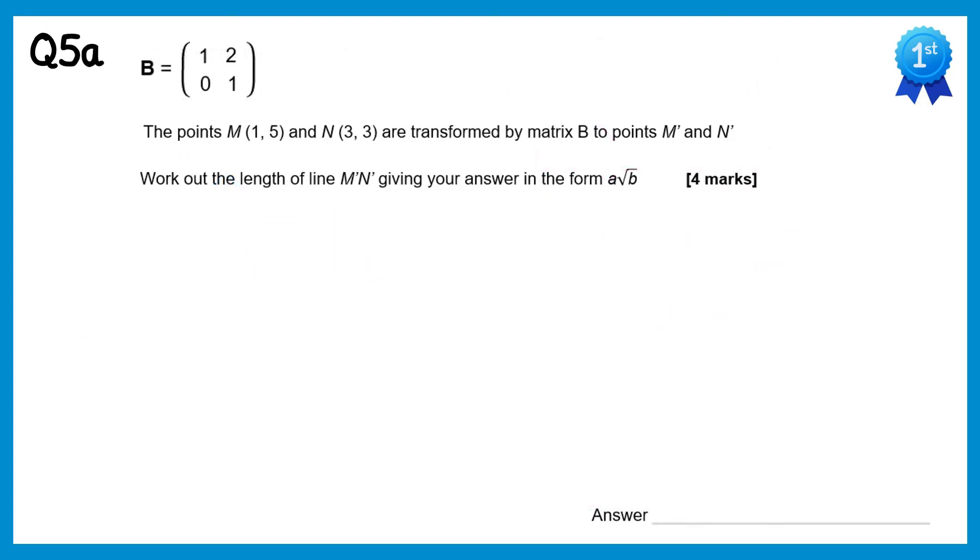For this question, we need to transform two points. We'll start with point M, so we'll write the matrix B, then the point M, which is (1,5). We'll do (1,2) with (1,5), which gets you 11, and (0,1) with (1,5), which gets you 5.